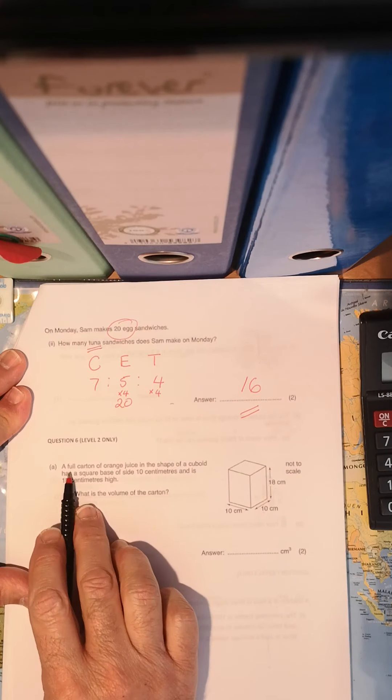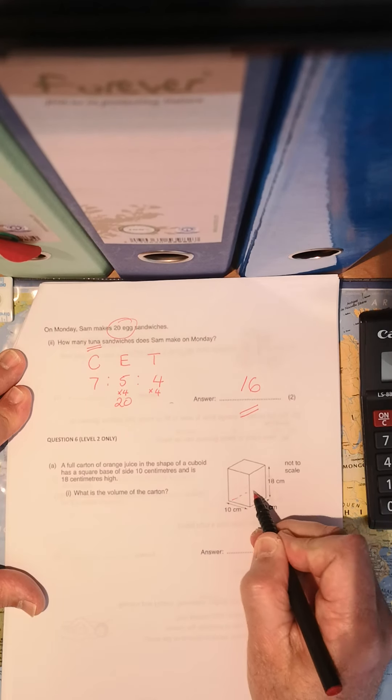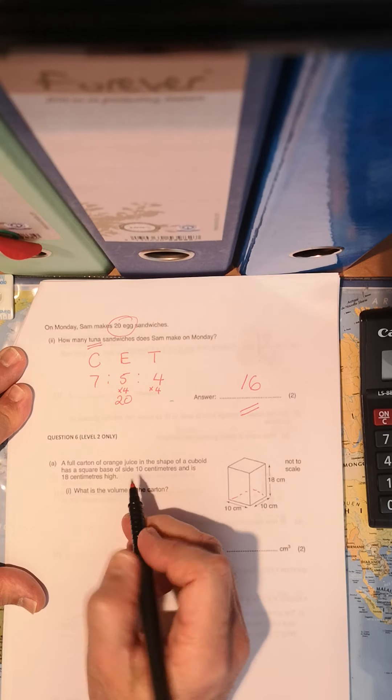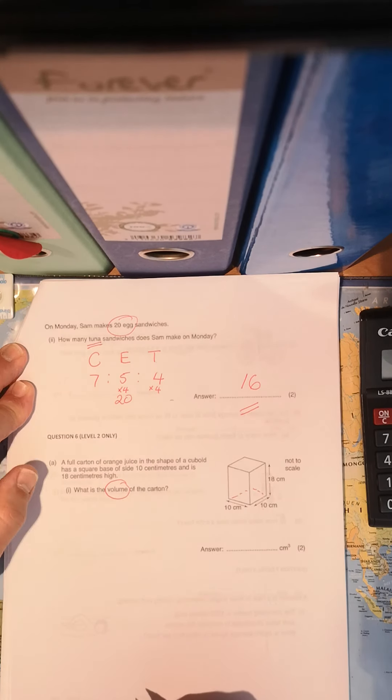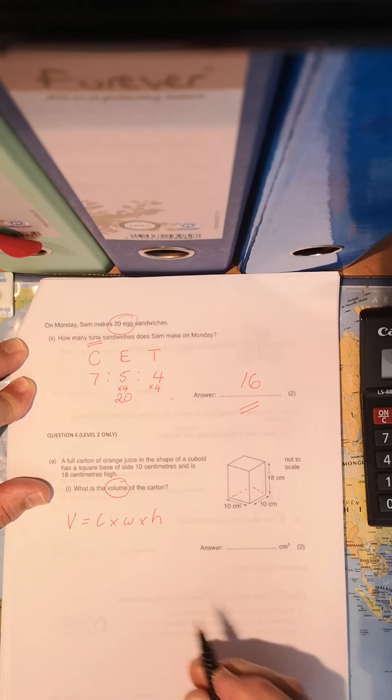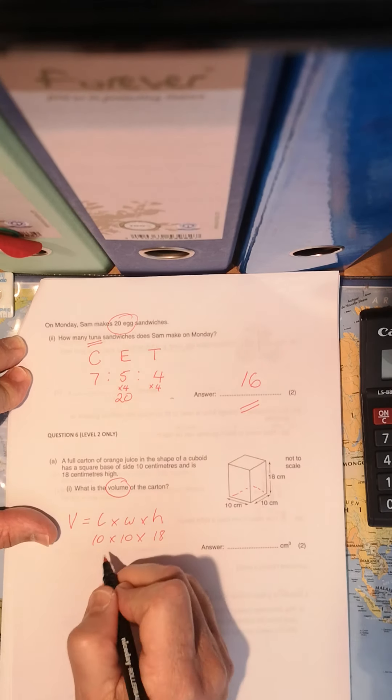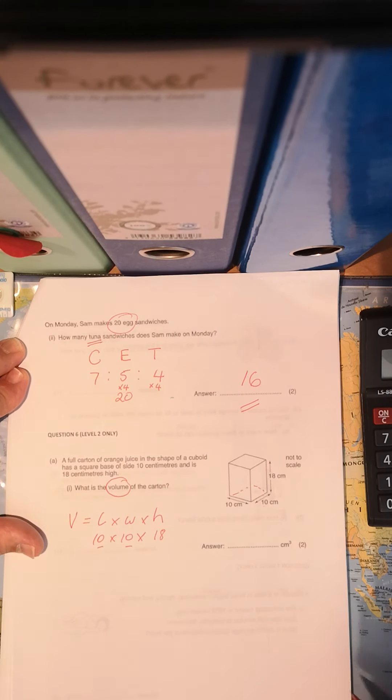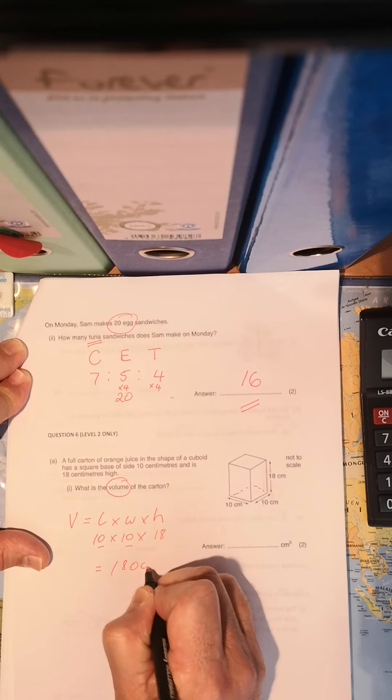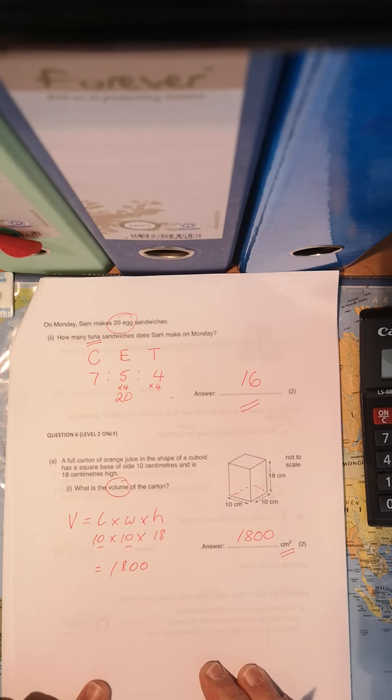Moving on. A full carton of orange juice in the shape of a cuboid has a square base. Square base. That's a square. So 10 times 10. And the height is 18 centimeters. What is the volume of the carton? Now we know the formula for working out volume is length times width times height or depth. So 10 times 10 times 18. And I know you're going to tell me you don't need your calculator for this one because you've got noughts involved, 10 and 10. So what do we have? 18 times 10 is 180 times another 10 is equal to 1,800. So there we go. 1,800 cubic centimeters. That is the volume of that cuboid.